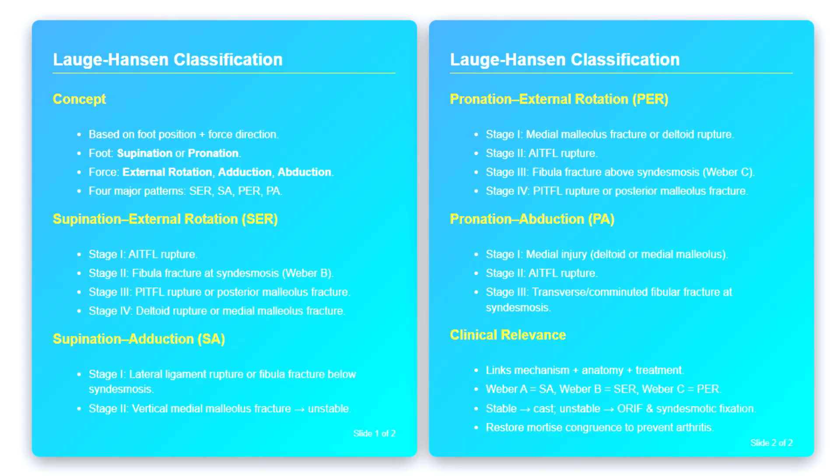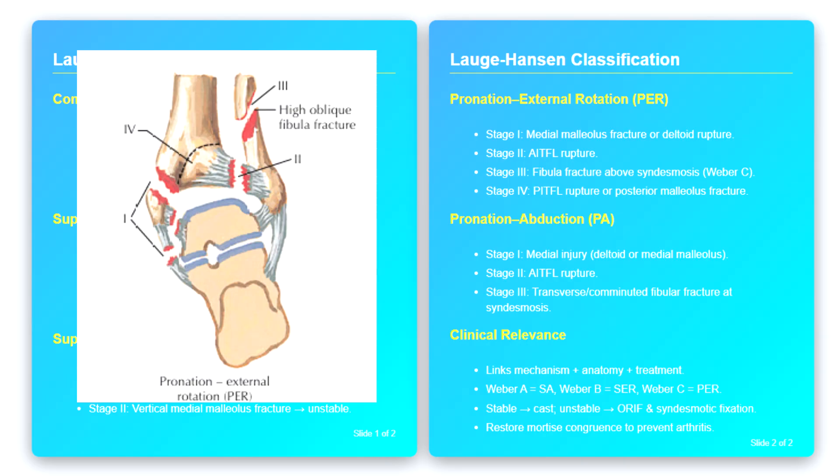Pronation external rotation, PER. The third pattern is pronation external rotation. In this injury, the foot is pronated and an external rotational force is applied. This is also a very common mechanism, particularly in higher energy trauma. The sequence again progresses through four stages. In stage one, the medial side is injured first, either through rupture of the deltoid ligament or a transverse fracture of the medial malleolus. In stage two, the anterior inferior tibiofibular ligament is torn.